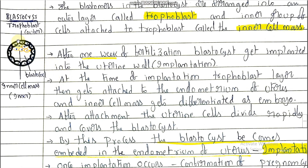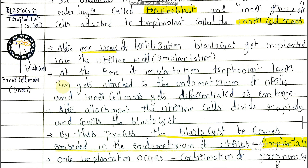What are the functions of trophoblast and inner cell mass? The trophoblast further attaches with the endometrium wall of the uterus but does not develop further as an embryo. Embryo formation takes place from the inner cell mass only in the blastocyst.